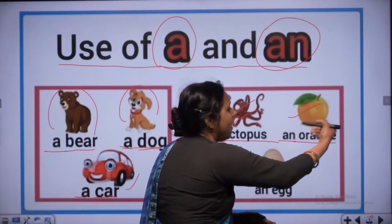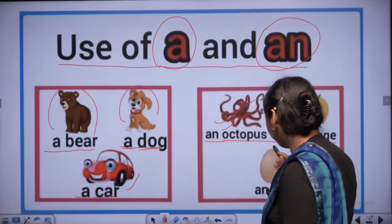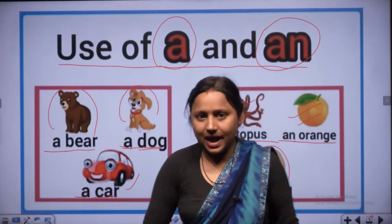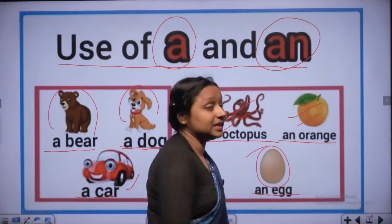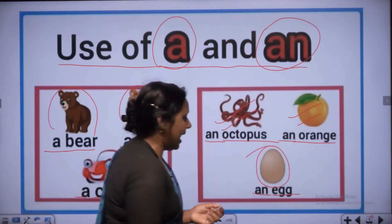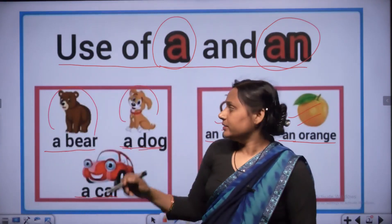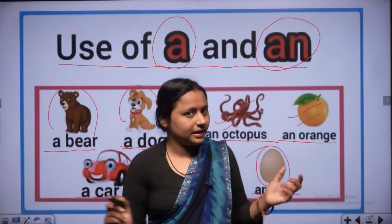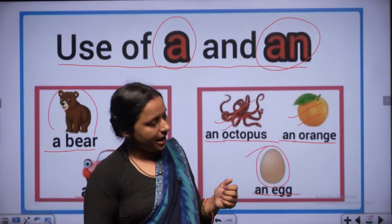This is orange fruit. Now this is egg. AN - E, double G - egg. AN egg. Here we learn use of AN. A and AN.